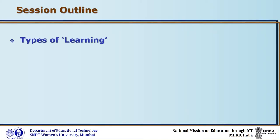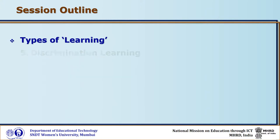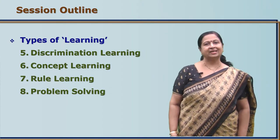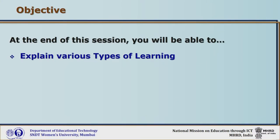From the lowest level to the highest, we can list the different types of learning as: signal learning, stimulus-response learning, chaining, verbal association, discrimination learning, concept learning, principle learning, and problem solving. In all there are eight types of learning as given by Robert Gagné. At the end of this session you should be able to explain the various types of learning.